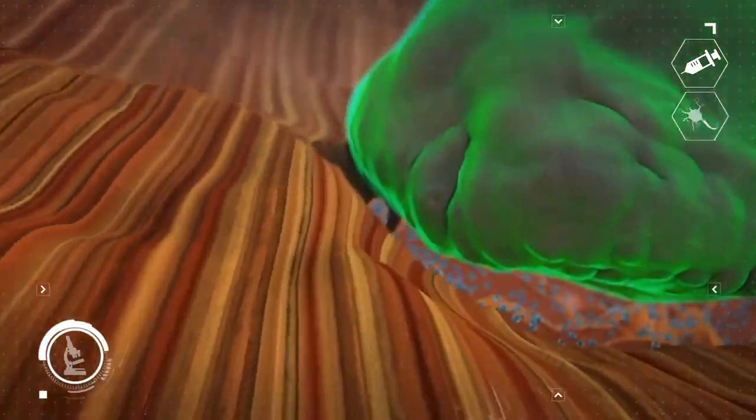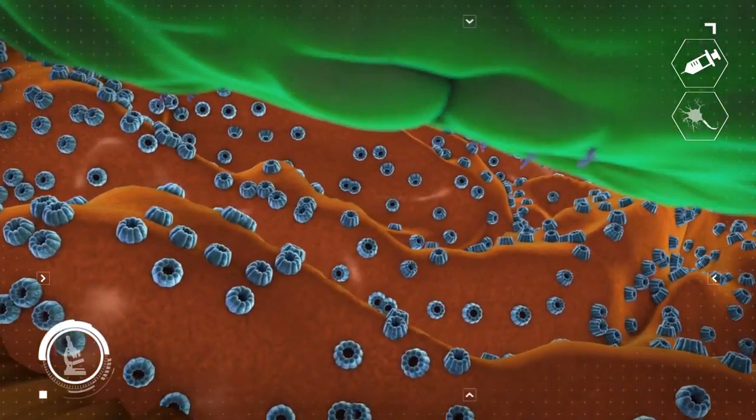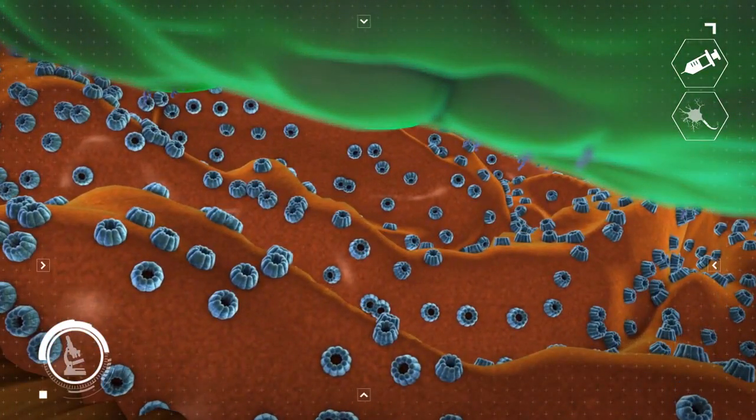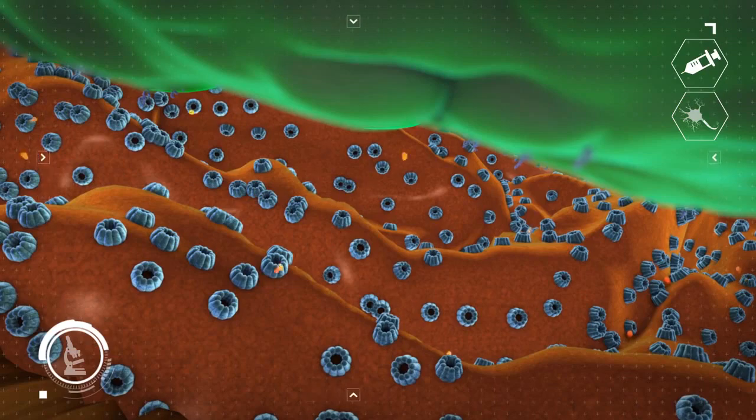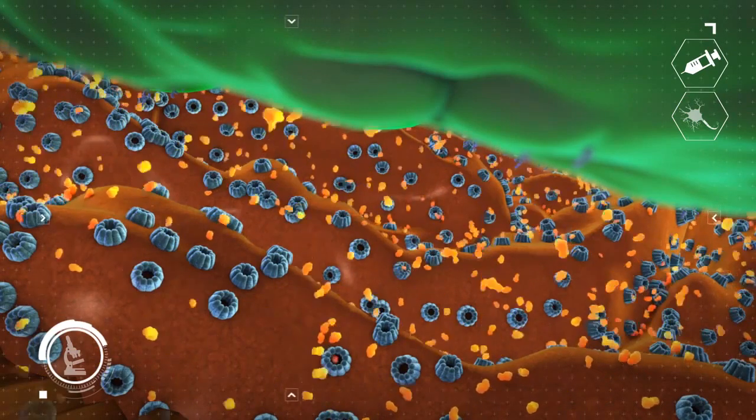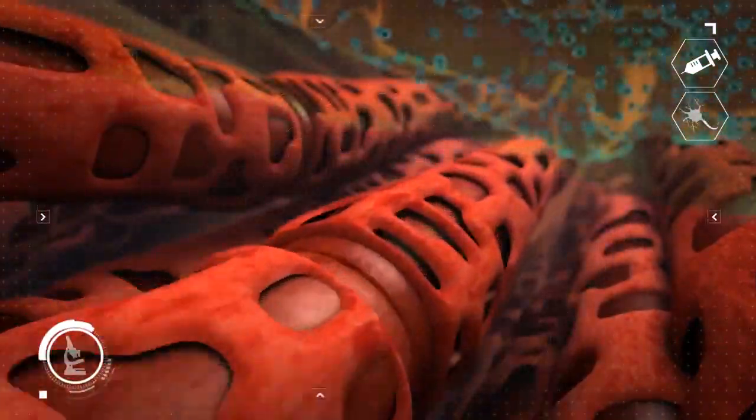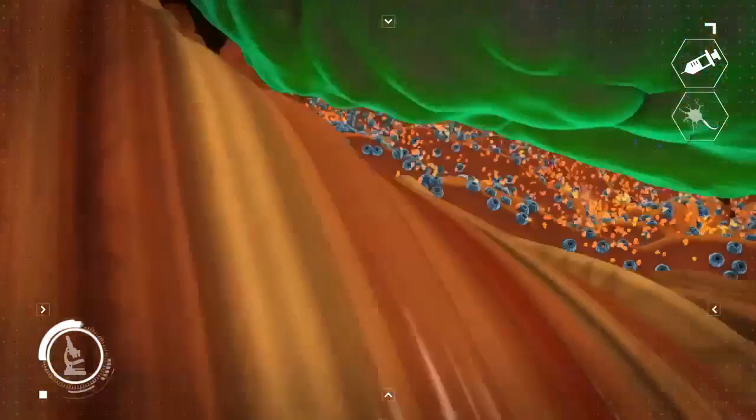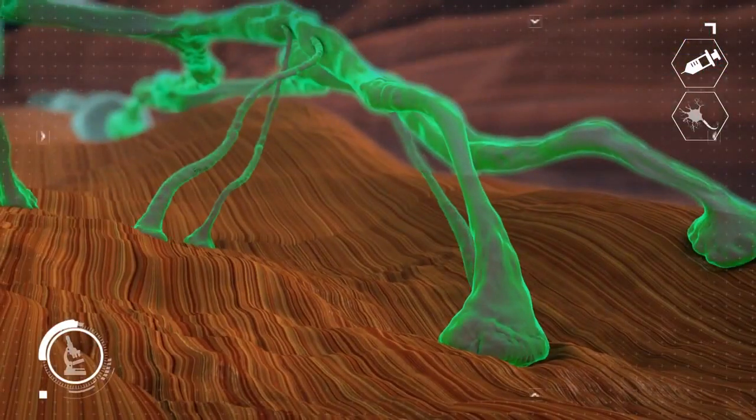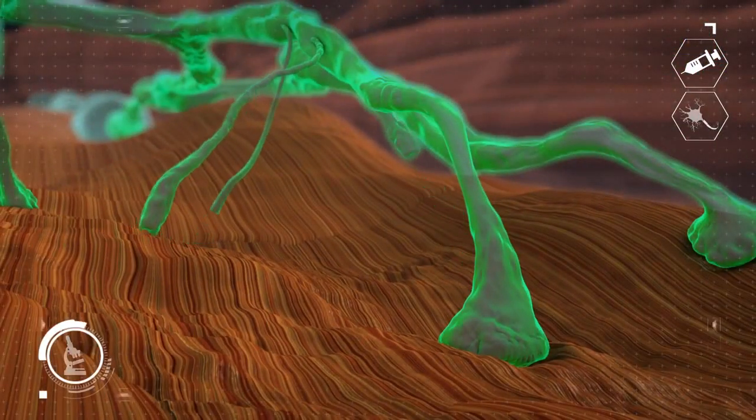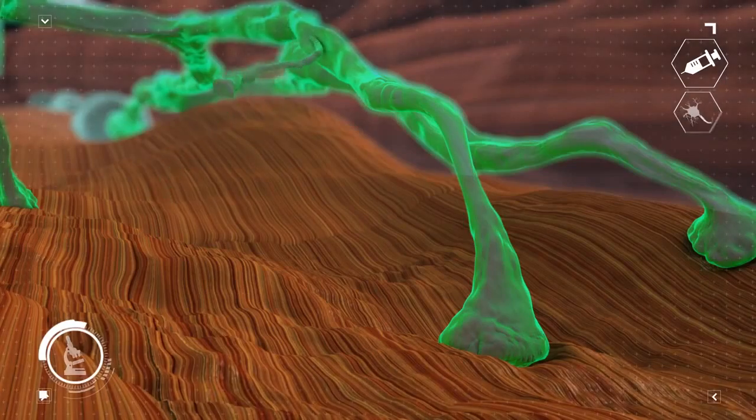Eventually, the original junction regains the ability to work again. After the action of the neurotoxin has ended, the sprouts retract and the original junction ensures normal muscle function is regained.